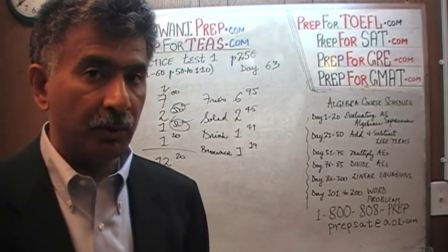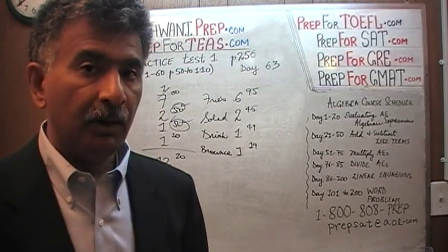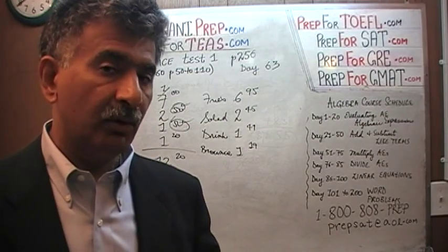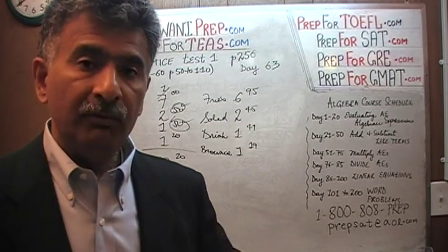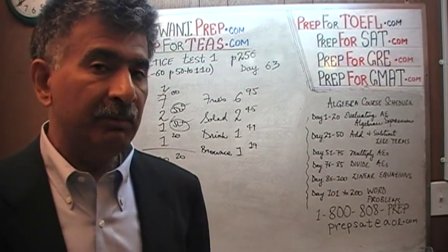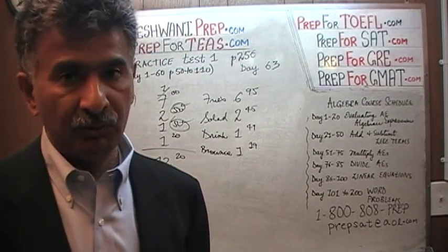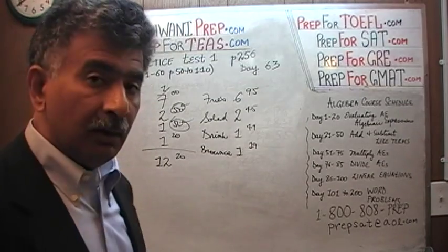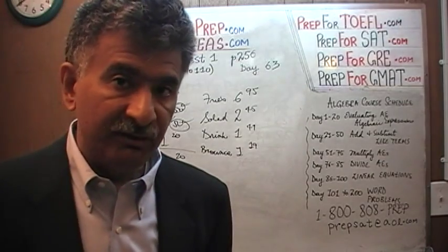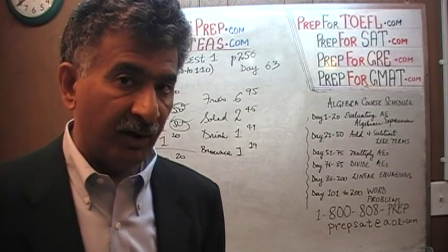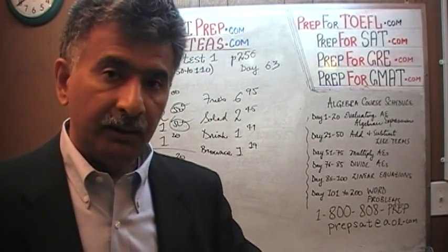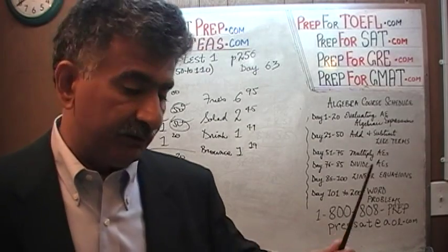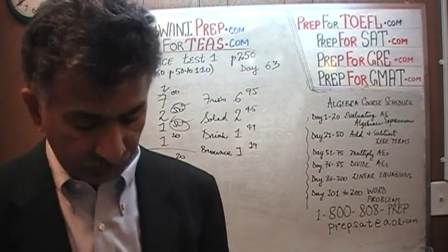So 7 plus 1 is 8, 8 plus 2 is 10 — looks like $12.20 to buy this. Now we look at the answer choices. We always round things up. Now we look at the answer choices and depending on how they are laid out, we may or may not have to do anything. In most cases the answers are far enough apart that we should be able to identify the right answer. Once in a while they are not.